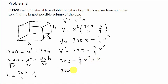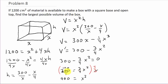Solving: 300 = (3/4)x², then multiply both sides by 4/3 to get x² = 400. So x = ±20. Since the side length can't be negative, x = 20.